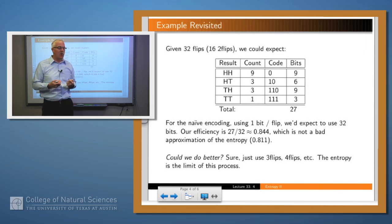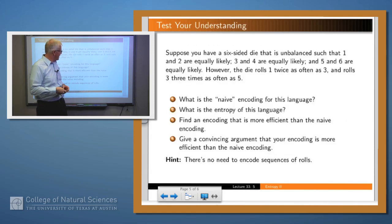So could we do better? Yeah, we could save up three flips at a time or four flips or five. And in fact, you'll get closer and closer to the entropy, the longer your sequence that you're encoding. Will we ever get there entirely? Probably not, because the entropy is the limit of this process. And we'd have to encode vastly long sequences of these things to get there.